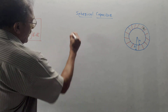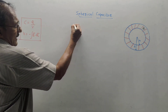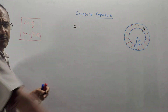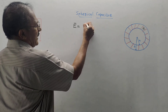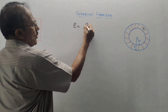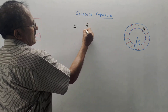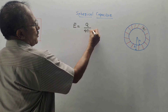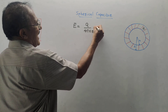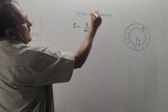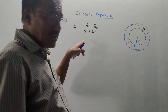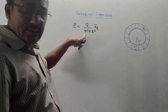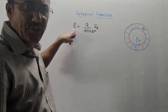You need to remember one formula derived from Coulomb's law: the equation of E-bar in the case of a sphere or a point charge is q divided by 4πε r², times â_r. The derivation starts with this equation, where E-bar is the electric field intensity.